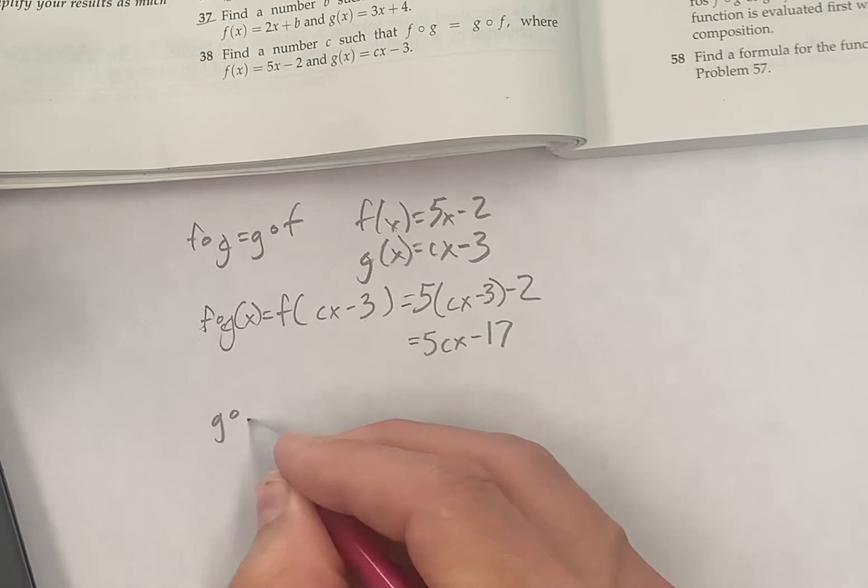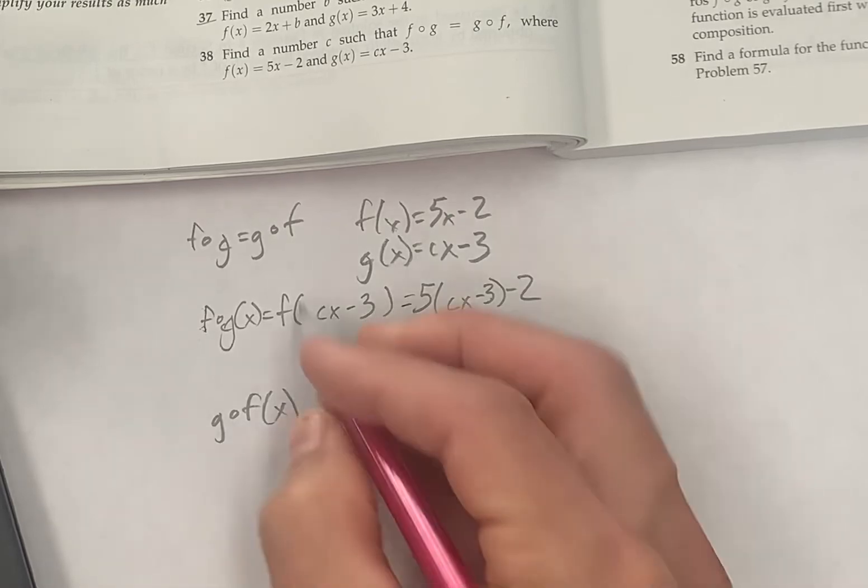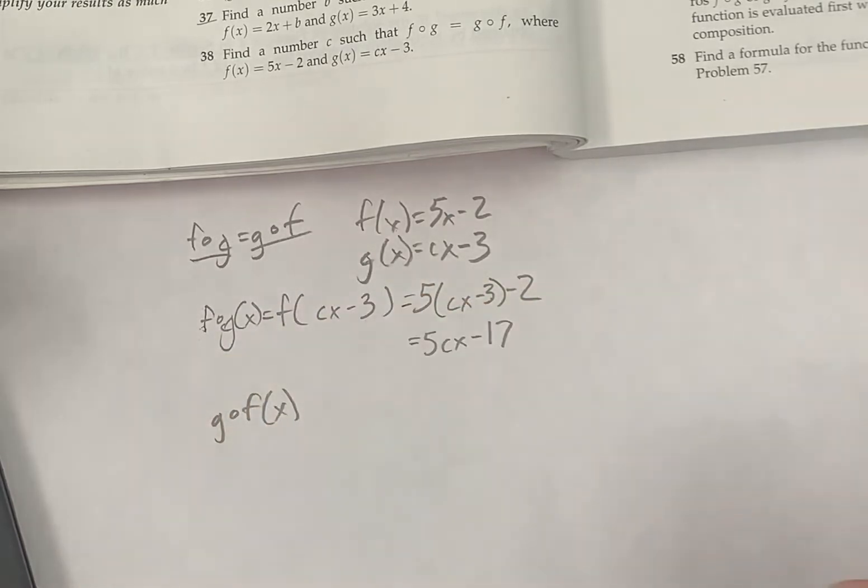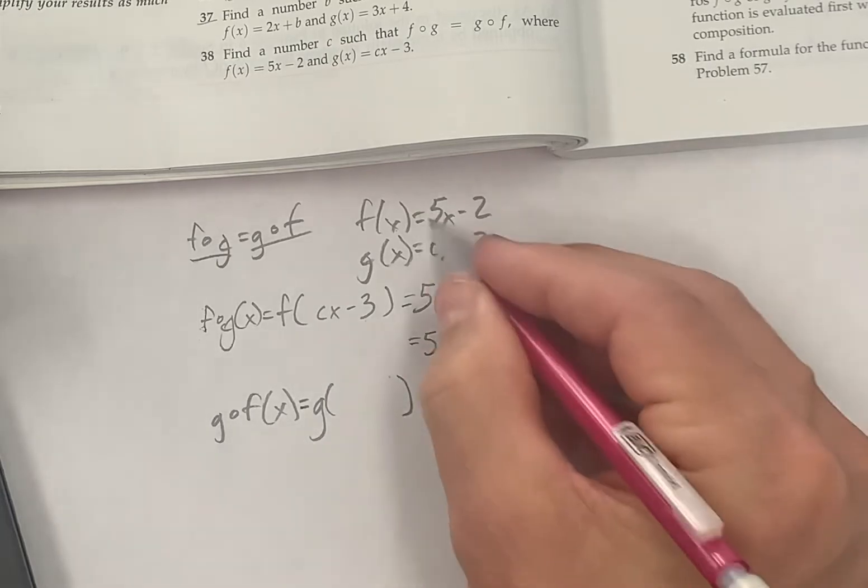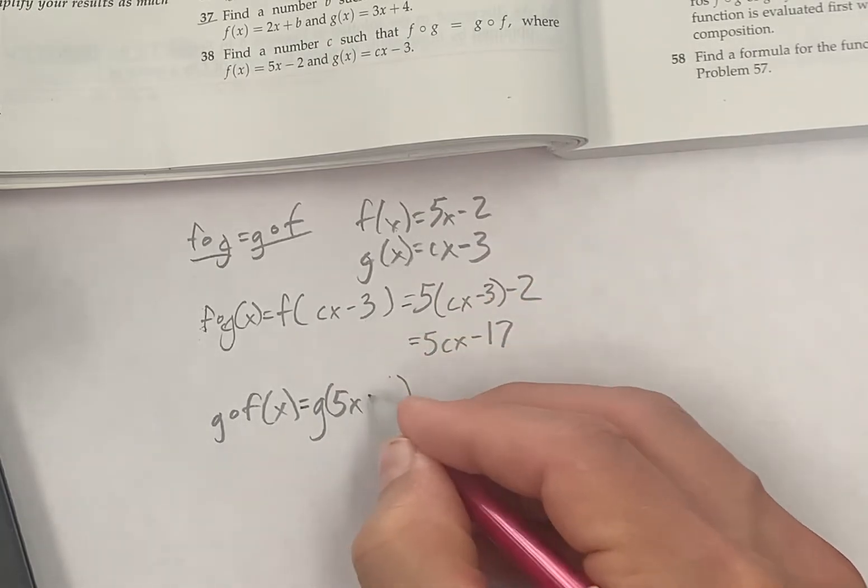And then the other thing we have to do here is g of f of x. I need to know what this is and what this is in order to say I need them equal to each other. Let's see, that's g of the whole of f, 5x minus 2.